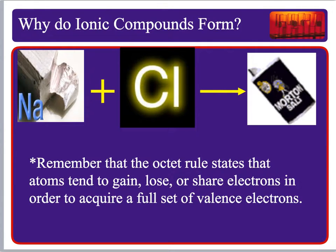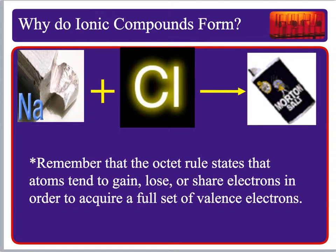So why do these ionic compounds form? They form because the octet rule says you want to acquire a full valence shell of electrons, and you can do that by gaining or losing electrons. Next we'll talk about covalent bonding and sharing, but right now we're talking about gaining or losing electrons to achieve a full valence shell.